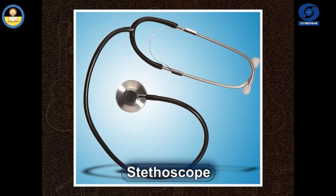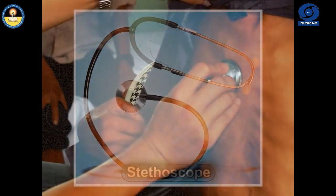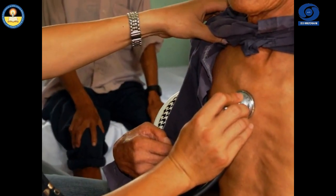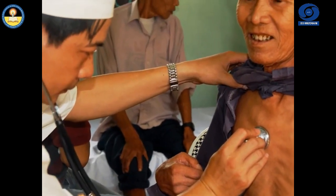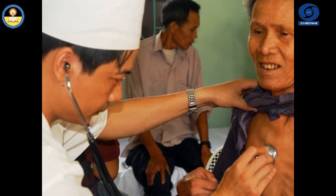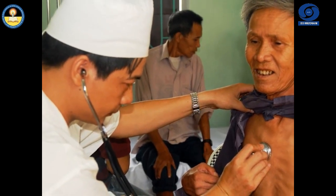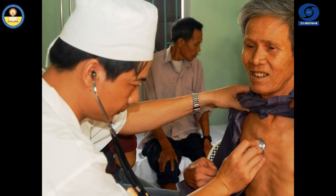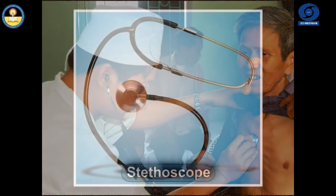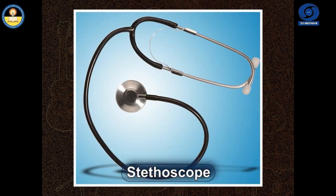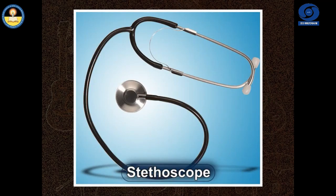Stethoscope is used by doctors to listen to the sounds produced within the patient's body, mainly by the heart or lungs. The sound produced by the heart reaches to the doctor's ear after multiple reflections within the tube of the stethoscope.